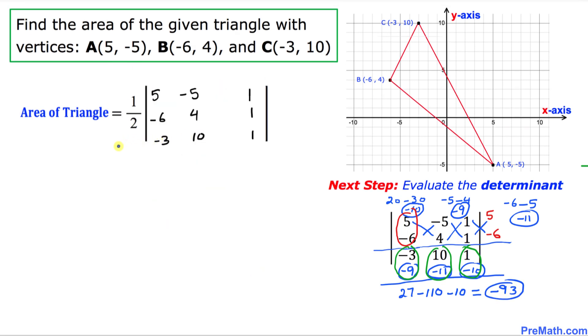And now finally we are going to calculate the area of the triangle by simply multiplying 1 over 2 times the value of this determinant, which is negative 93.